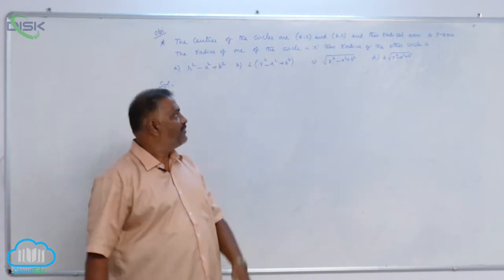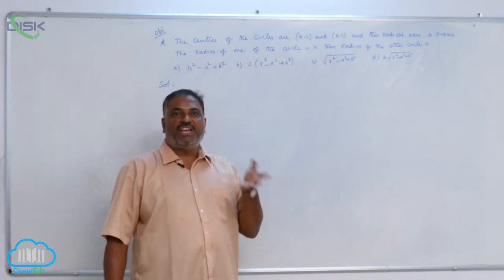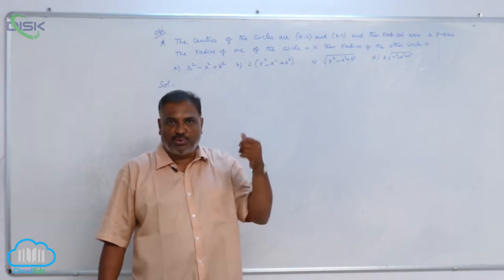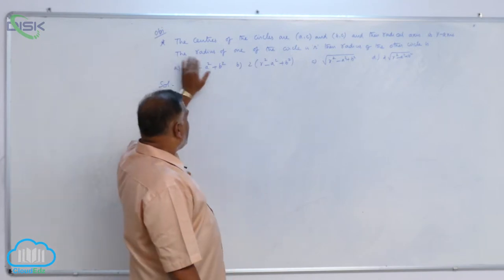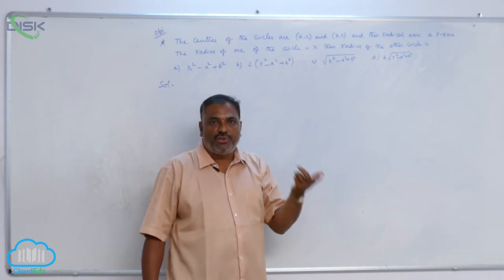Now center is given. Their radical axis is the y-axis. All of you know that the equation of the y-axis is x equals 0. The radius of one circle is r, then the radius of the other circle we need to find out.